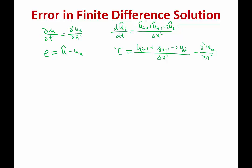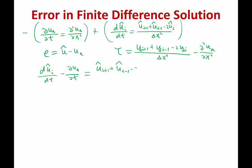But when you look at the solution error and derive its evolution by taking the analytical equation and the numerical equation and subtracting them from each other, what you get on the left-hand side is d(u_i-hat)/dt minus partial(u_a)/partial(t), which is equal to something very similar to the truncation error but not the truncation error. It's not the truncation error because the finite difference operator is applied to the discrete solution, not the analytical solution, while the analytical derivative is applied to the analytical solution.